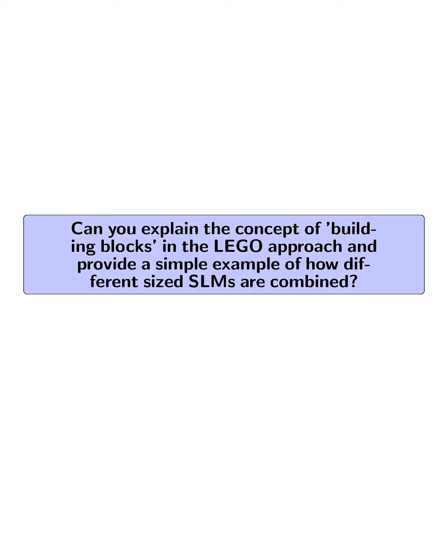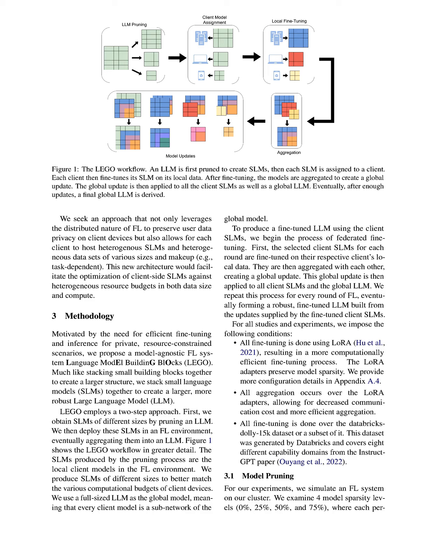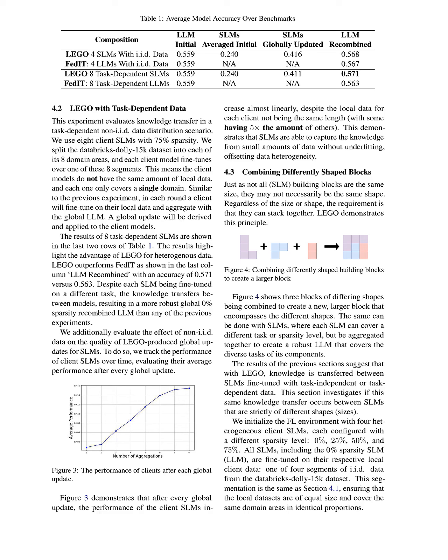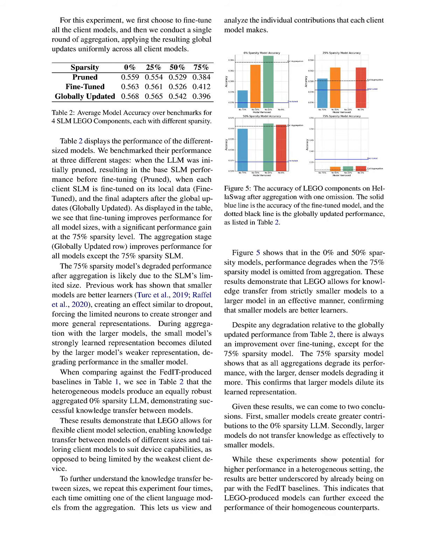Can you explain the concept of building blocks in the LEGO approach and provide a simple example of how different-sized SLMs are combined? In the LEGO approach, building blocks refer to small language models (SLMs) derived from a larger LLM through a pruning process. These SLMs can be of varying sizes and sparsity levels, allowing them to be tailored to the computational capabilities of different client devices. For example, in the experiments, four SLMs with 75% sparsity were created from an LLM, each fine-tuned on local data, and then aggregated to form a robust global LLM.